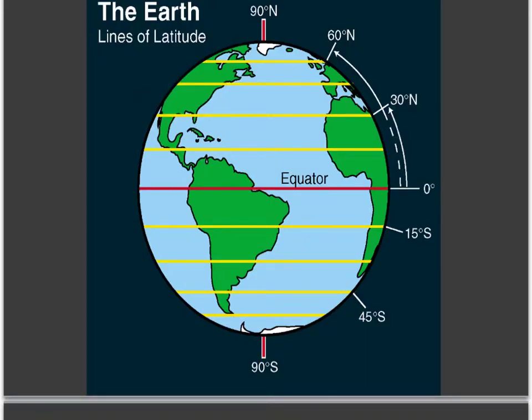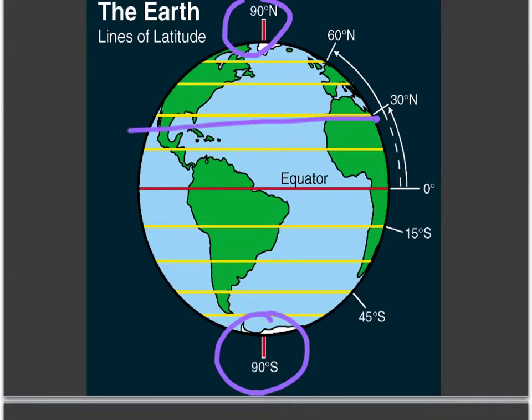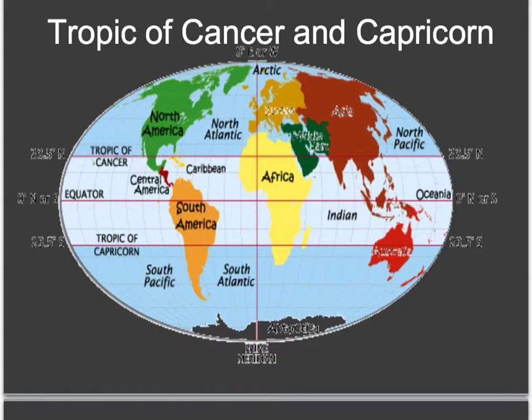So, lines of latitude: you have the equator. The furthest north you could ever get is 90 north, and the furthest south you can ever get is 90 south. And then everything in between, you have the Tropics of Capricorn and Cancer. The Tropic of Cancer runs at 23.5 degrees north, and Capricorn runs at 23.5 degrees south. So there are lines of latitude that exist.